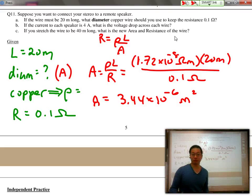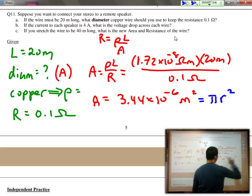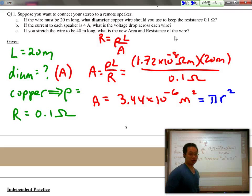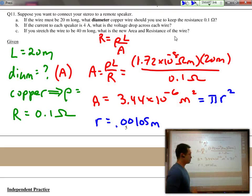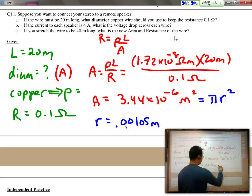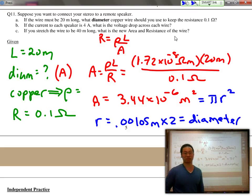But we're not looking for the area, we're looking for the diameter. So we have to figure out what the radius is. We can set that equal to pi R squared. So we divide by pi, square root, and we get the radius. So this would equal 0.00105 meters, times 2, would equal the diameter in this case.